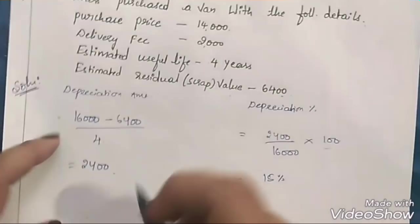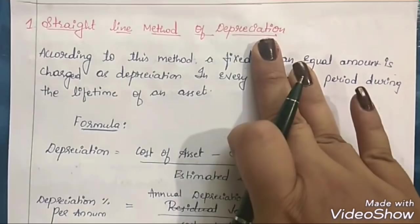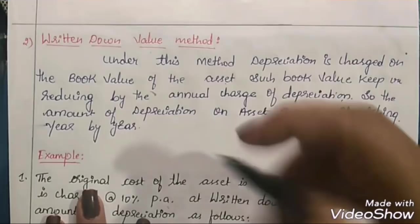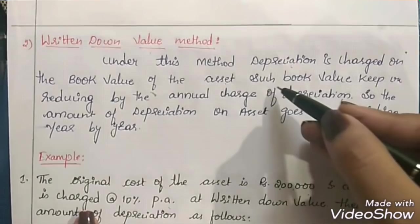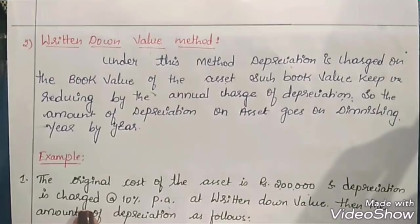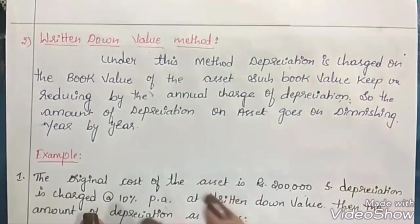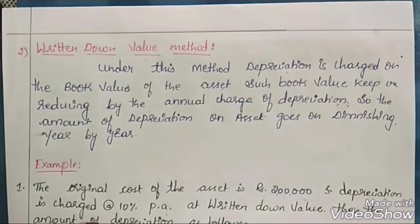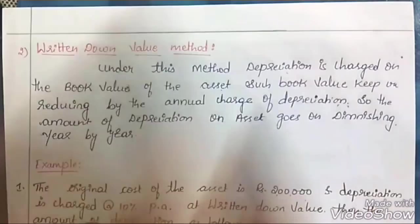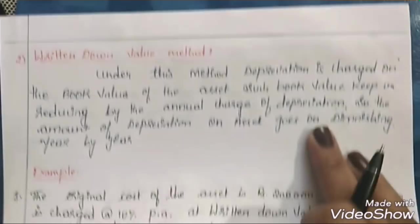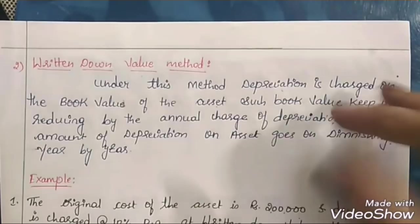The second method is written down value method. Under this method, depreciation is charged on the book value of the asset, not on the original cost. The book value keeps reducing by the annual charge of depreciation, so the amount of depreciation goes on diminishing year by year. This is the main difference between straight line method and written down value method.